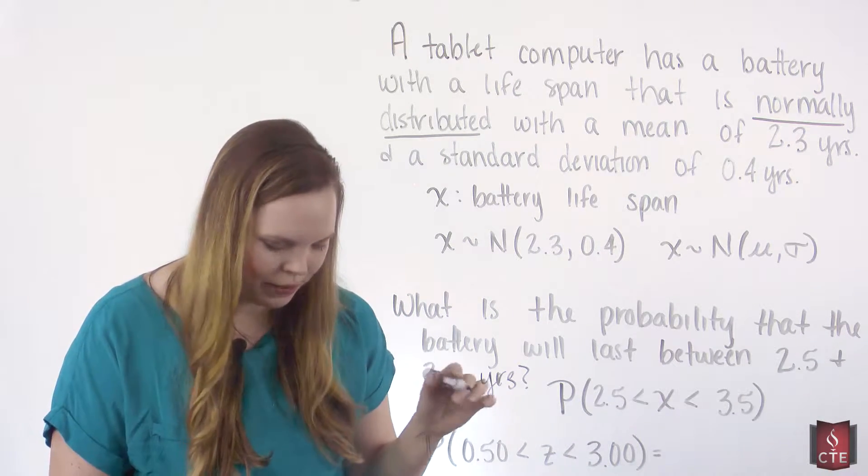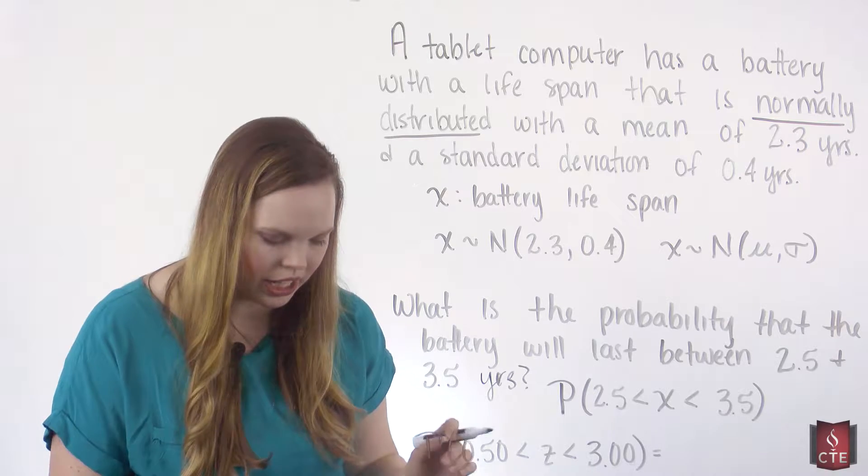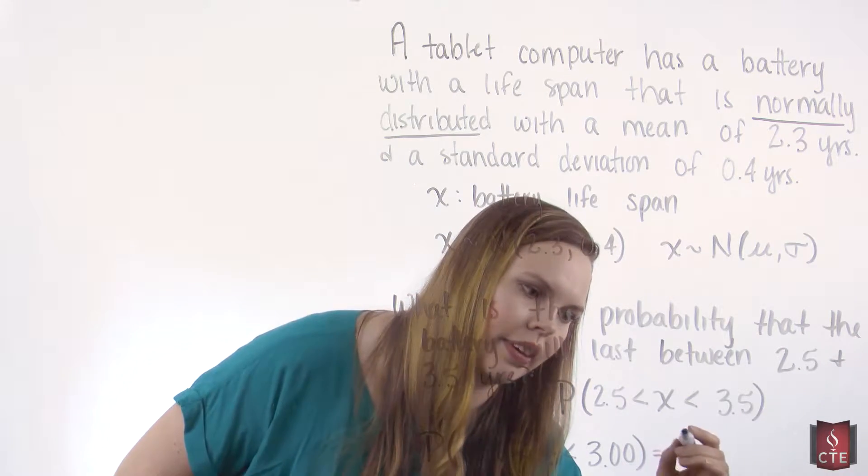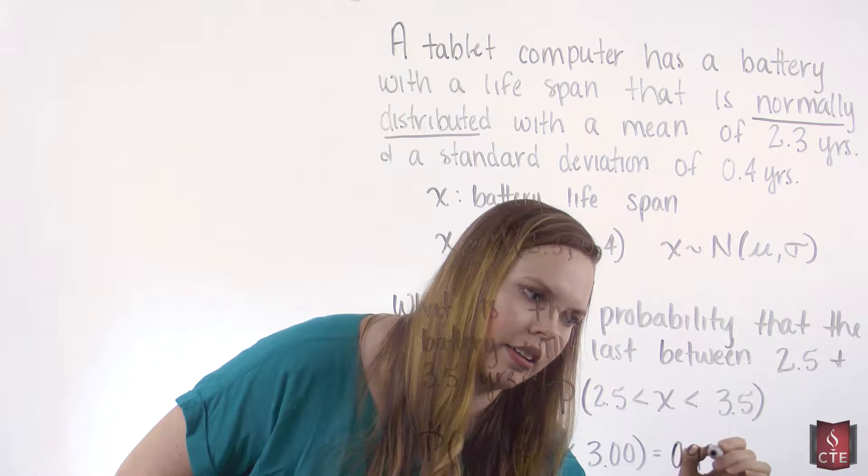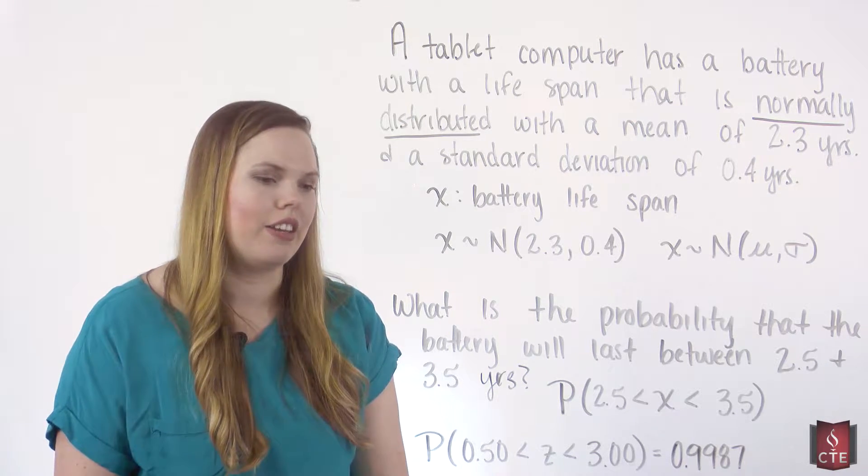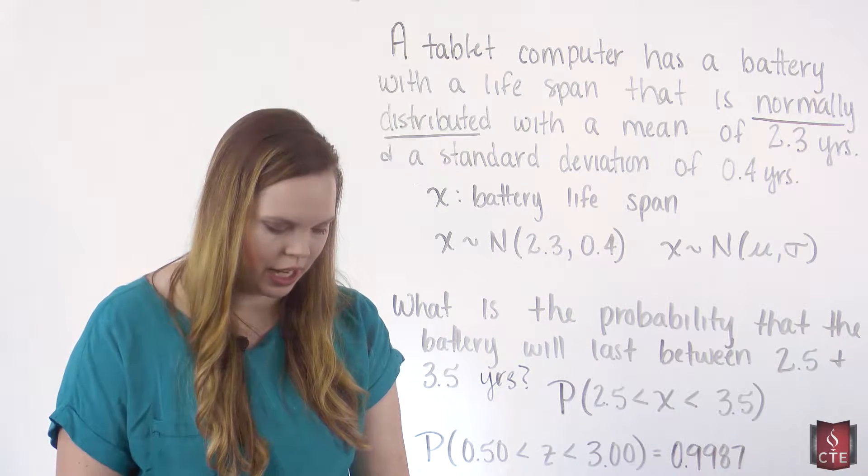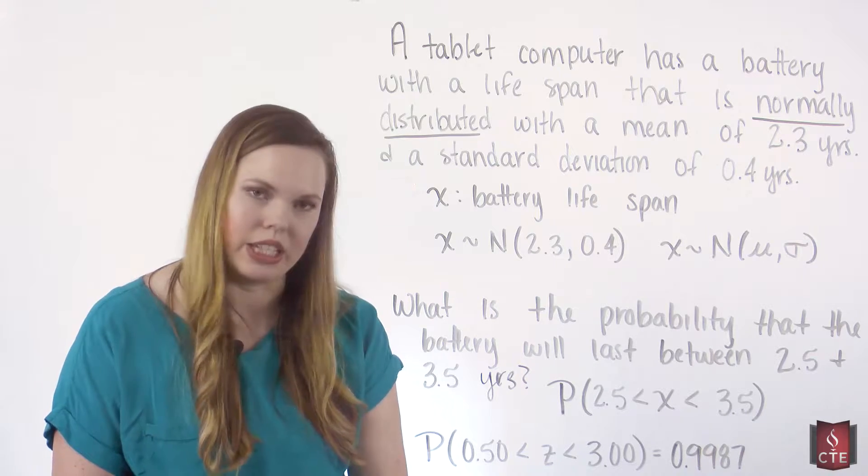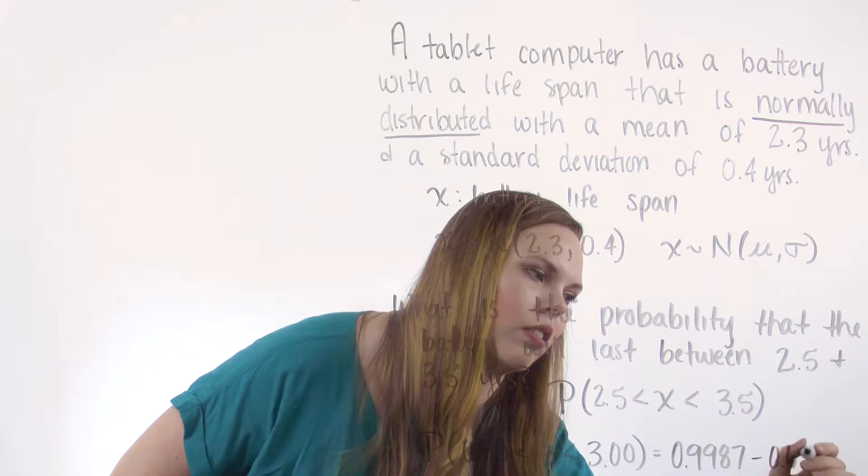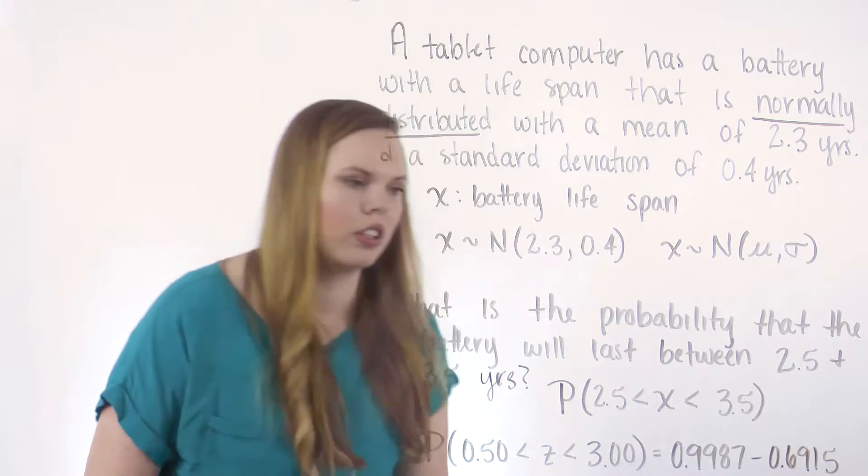If you look it up in the z-score table, the area to the left of it is 0.9987. That's the area to the left of 3. And then if I look up 0.5 in the table, the area to the left of it is 0.6915.